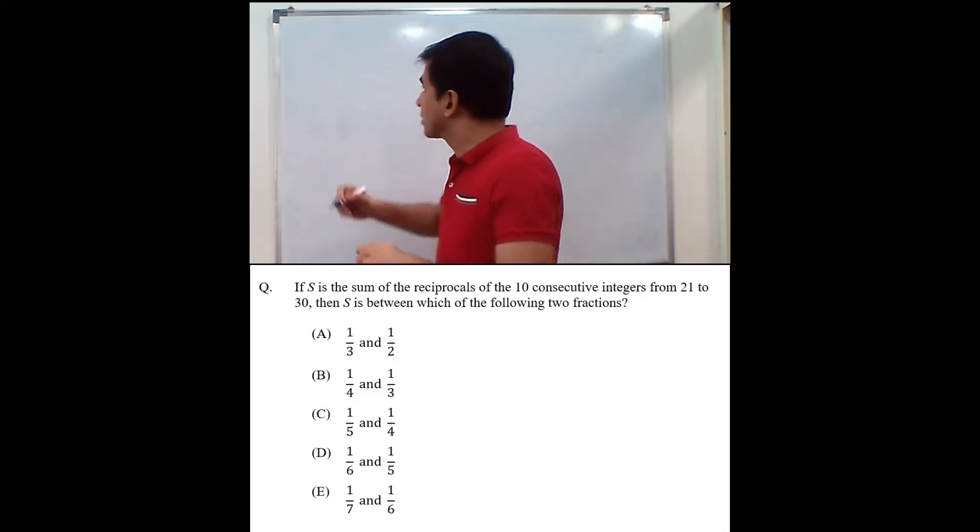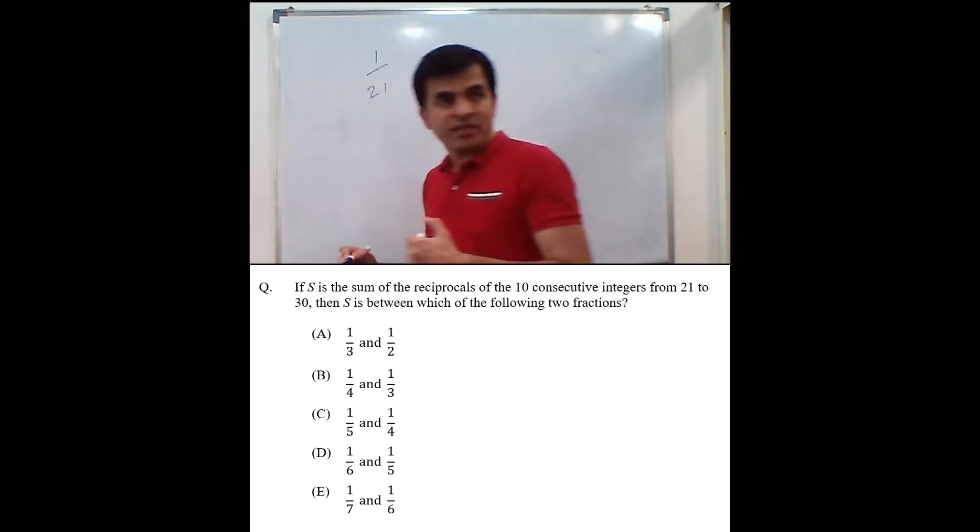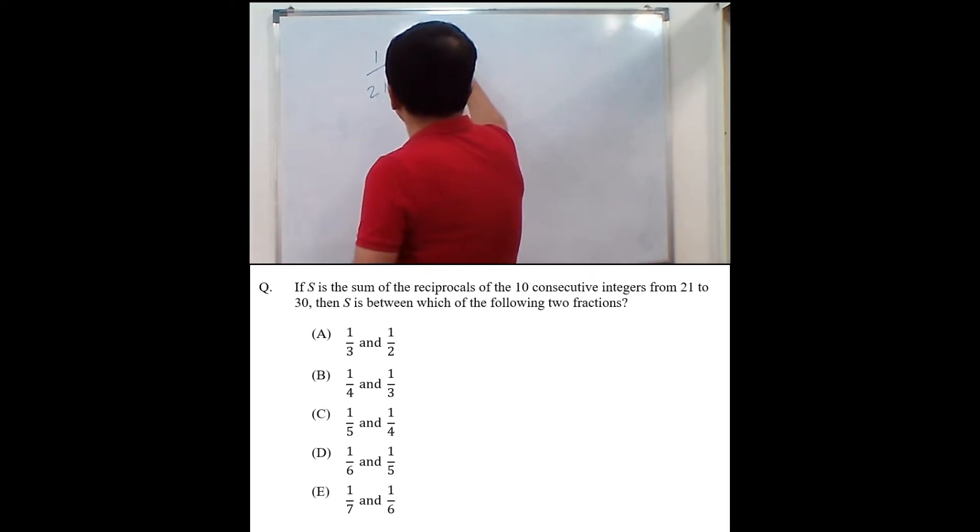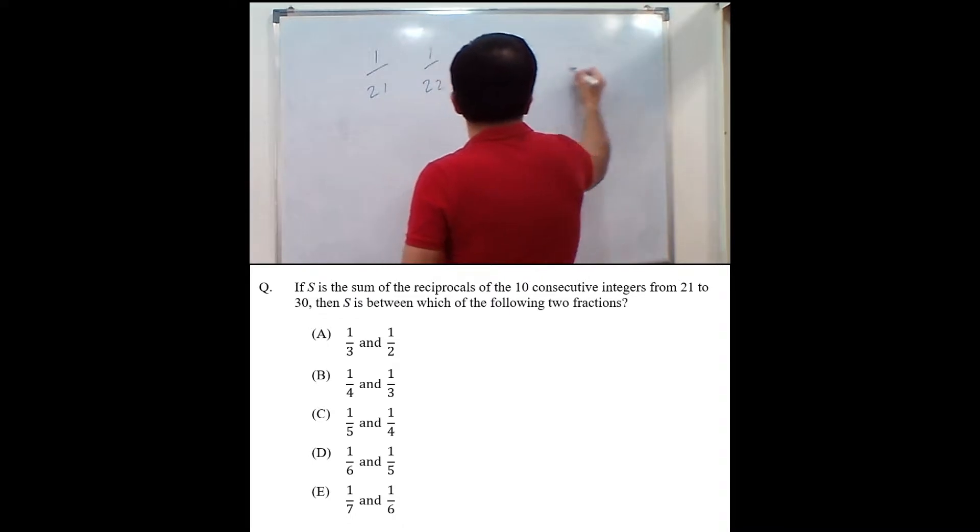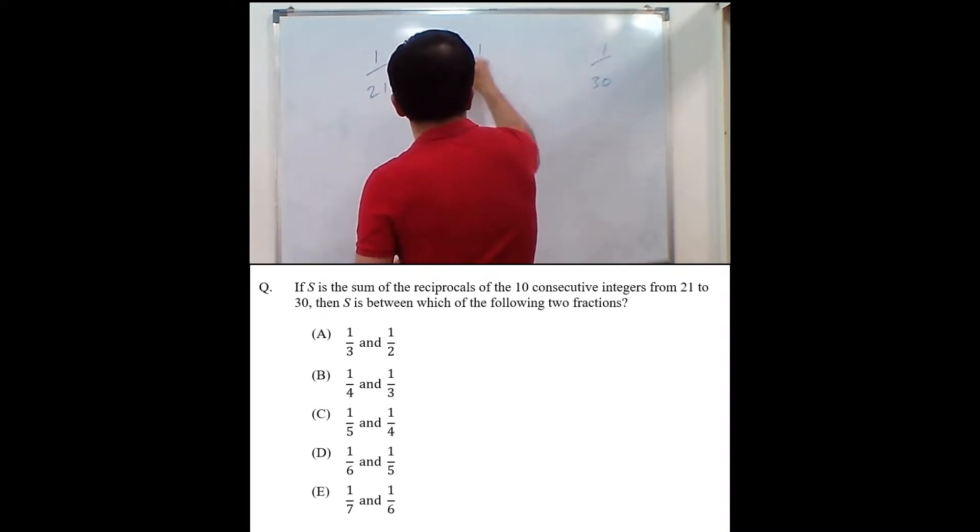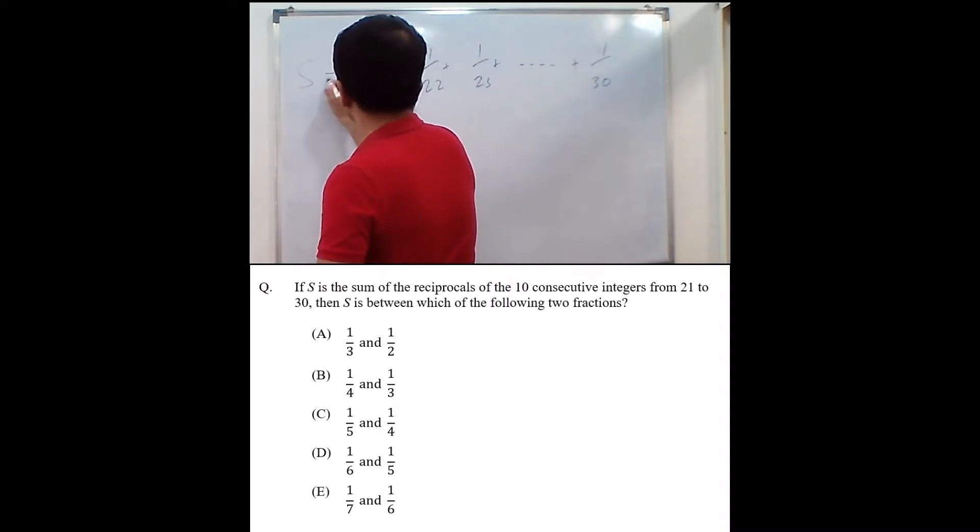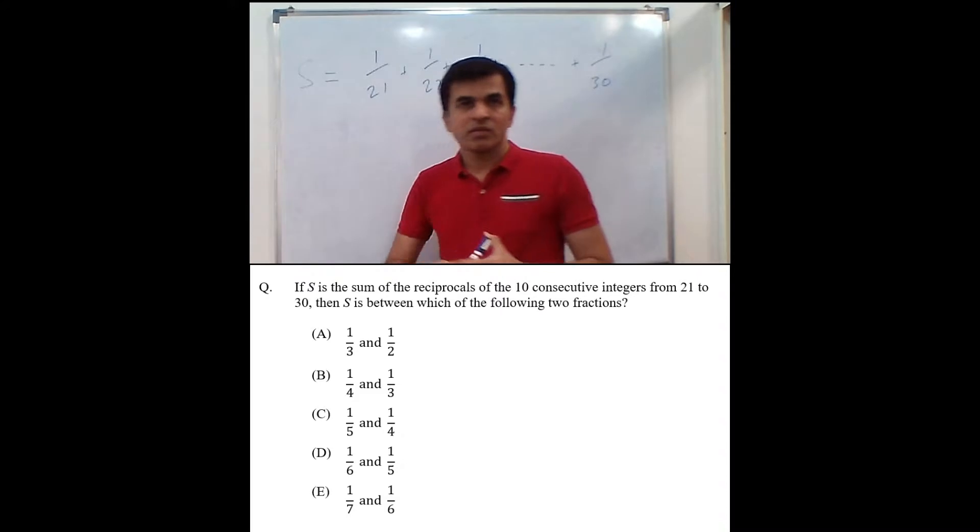Which means if I take 1 over 21, reciprocal of 21, then I take 1 over 22, then I take 1 over 23, and I go on up to 1 over 30, and then I add up everything. That is what S is equal to.